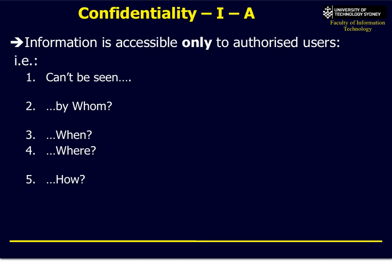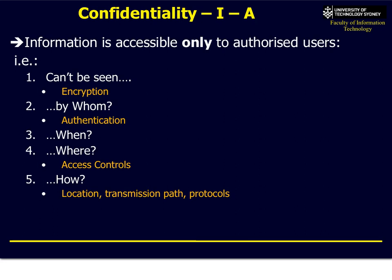The first concept is confidentiality. This is where you need to keep information accessible only to authorised users — we need to check who can see it, when, where, and how. For example, we encrypt the information so it can't be seen without the decryption ability. We check authentication — make sure people log in, find out who they are, and what they can access. We check when and where they can access it: online, at UTS, offline, from home. What sort of access controls do we have? And how is it transmitted — HTTP, HTTPS, or by email?